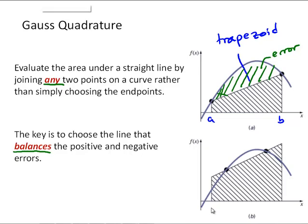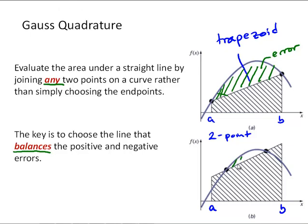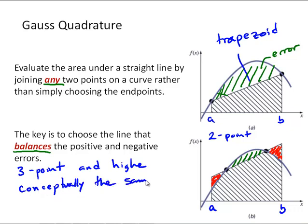This second graphic indicates what I'm talking about. If we're integrating over a range from a to b, that's still the trapezoid we use to calculate the integral, and this would be for a two-point calculation — we can use more points as well. We've strategically chosen these points so that the positive error here is balanced by the negative error here. We can do this for a two-point formula, thinking about this as a line, or a three-point and higher — conceptually the same idea.